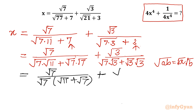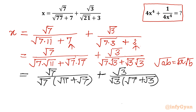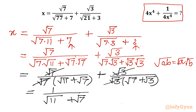Here we write square root 3 over square root 3, which is common, times (square root 7 plus square root 3). Now we can cancel. What is left is 1 over (square root 11 plus square root 7), plus 1 over (square root 7 plus square root 3).